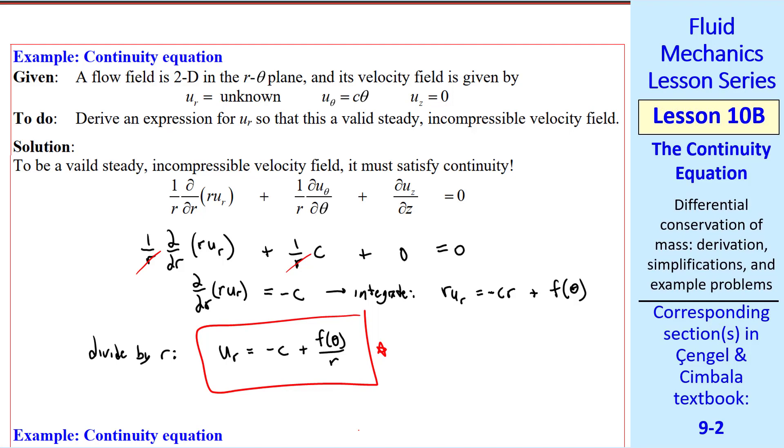I'll leave it as an exercise for you to verify this. Plug this equation into here, and you can see that r u theta is negative r c, plus f of theta. When we take the r derivative, we get minus c, so we have minus c over r, plus c over r, equals 0.